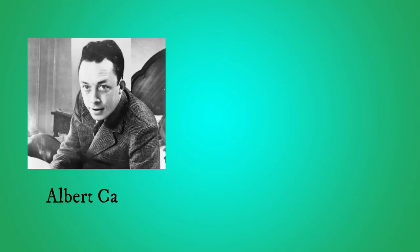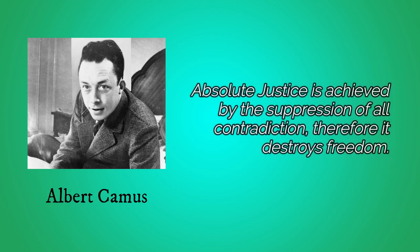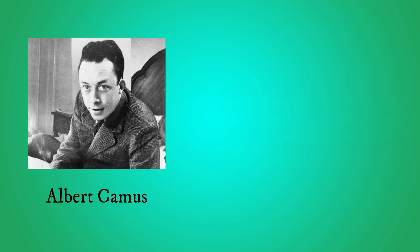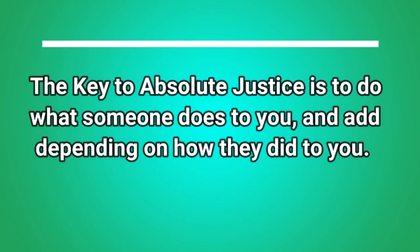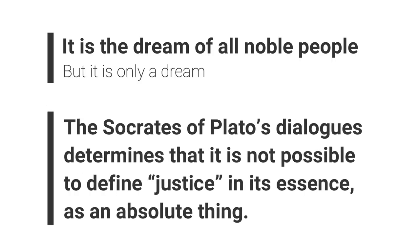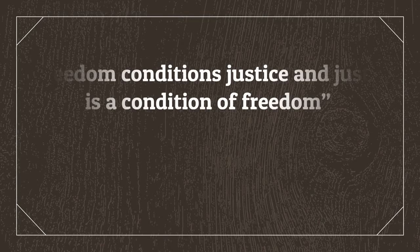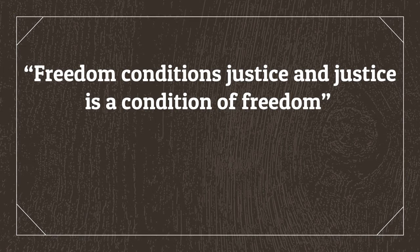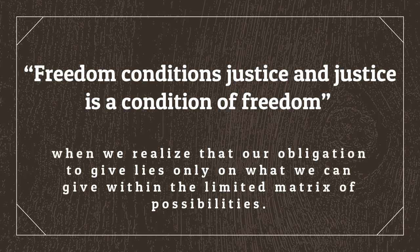Lastly, according to Albert Camus, a French philosopher, absolute justice is achieved by the suppression of all contradiction. Therefore, it destroys freedom. The key to absolute justice is to do what someone does to you, depending on how they did it to you. It is the dream of all noble people, but it is only a dream. The Socrates of Plato's dialogues determines that it is not possible to define justice, in its essence, as an absolute thing. Freedom conditions justice, and justice is a condition of freedom, when we realize that our obligation to give lies only on what we can give within the limited matrix of possibilities.